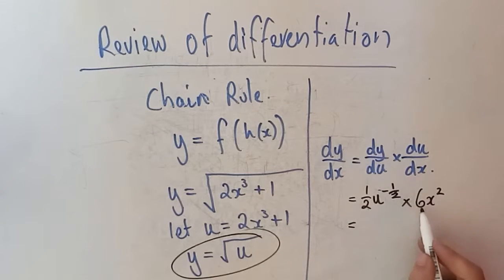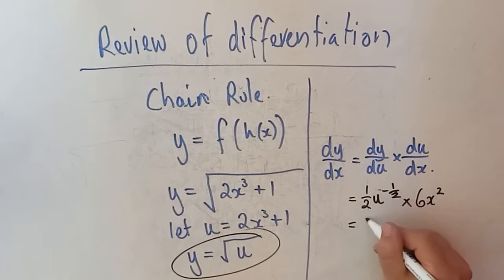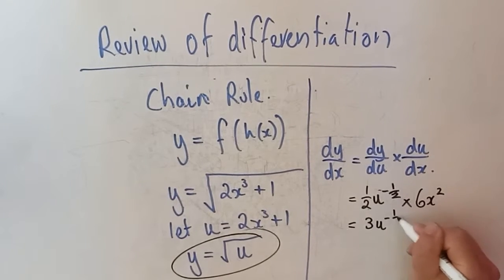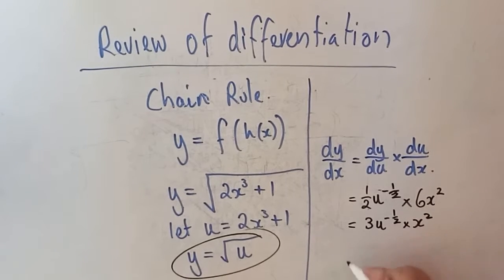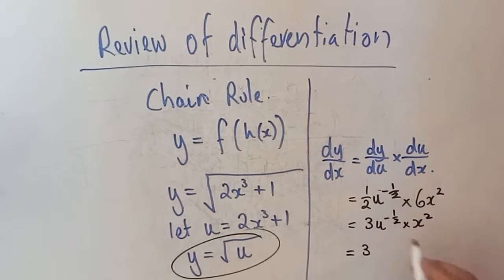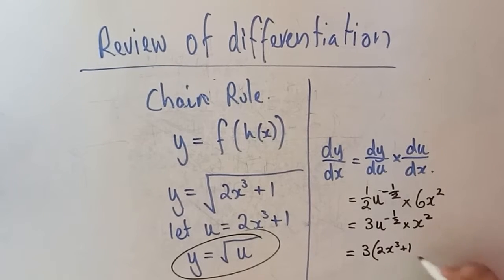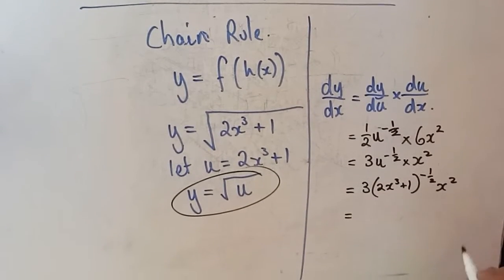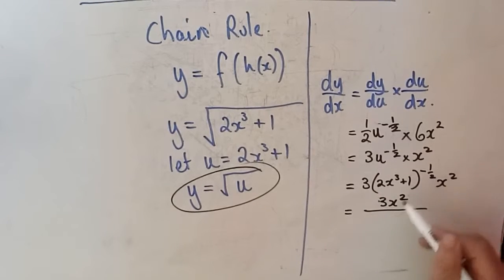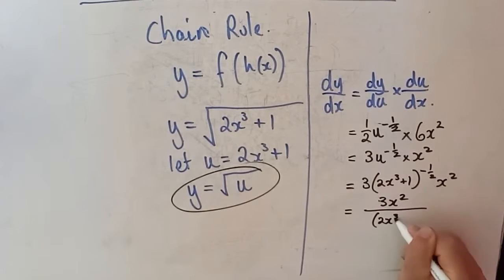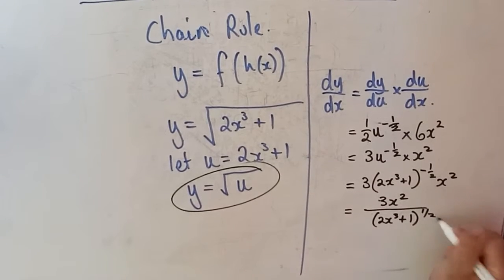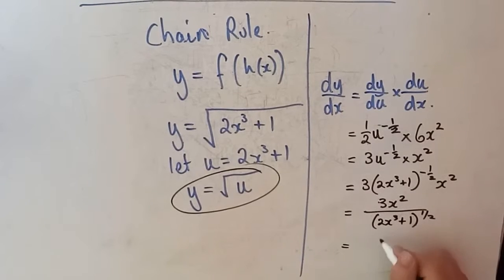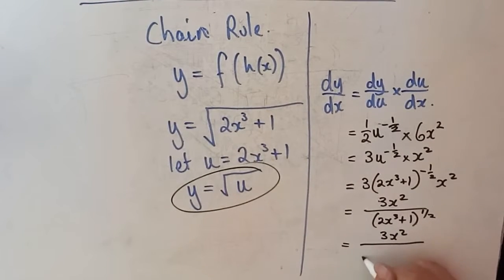Putting it all together, I've got 6 divided by 2, which is 3. So I get 3u to the negative half times x squared. Substituting u back in: 3 times (2x cubed plus 1) to the negative half, times x squared. I can write this as 3x squared over (2x cubed plus 1) to the half, which I'd write as the square root of (2x cubed plus 1) — it looks really pretty that way.